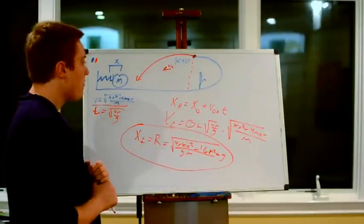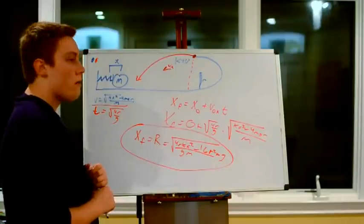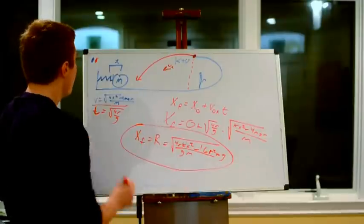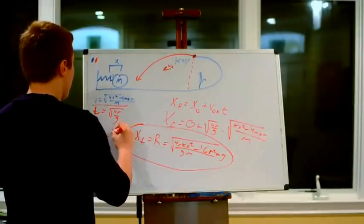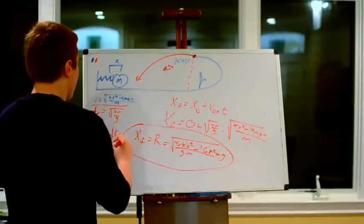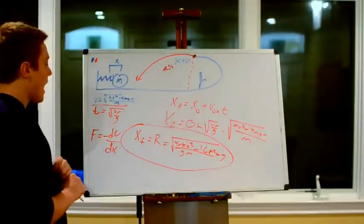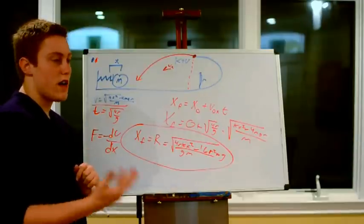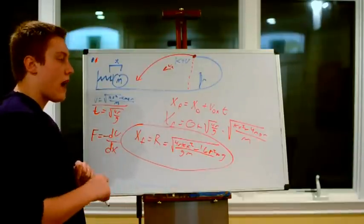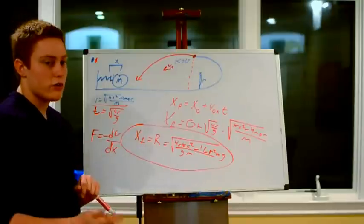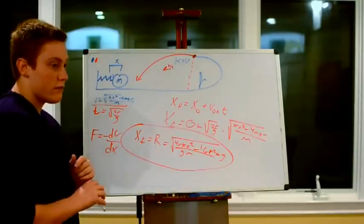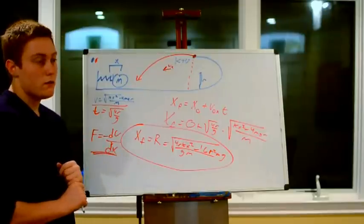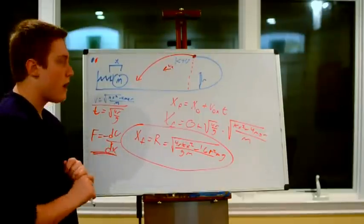One more important note: you could do this problem with different forces. The key principle is that force equals the negative derivative of potential energy. For AP students, I could give you a restorative force like kx squared or kx cubed instead of kx, and you'd integrate that and use it the same way we used one half kx squared. This idea comes up a lot in AP Physics, especially on the AP Physics test, so be aware of that.